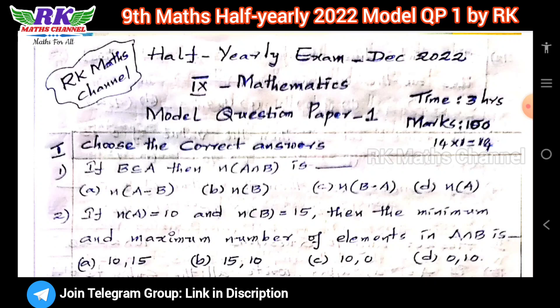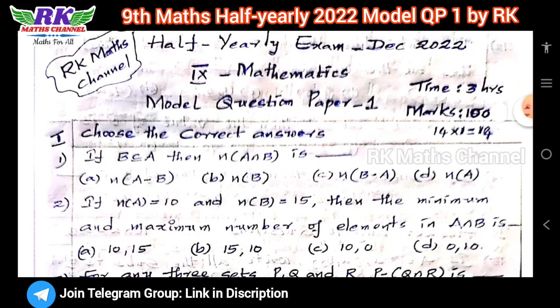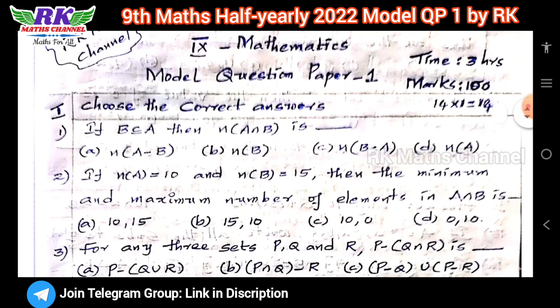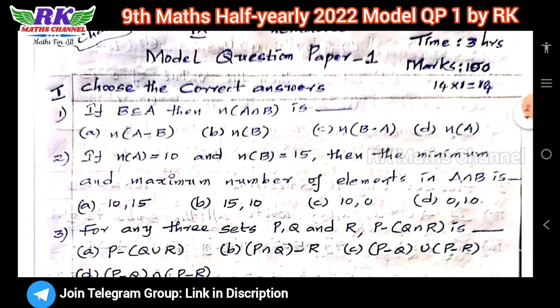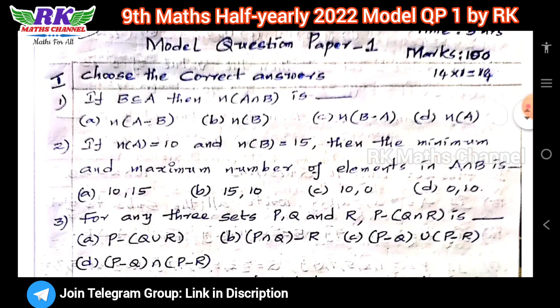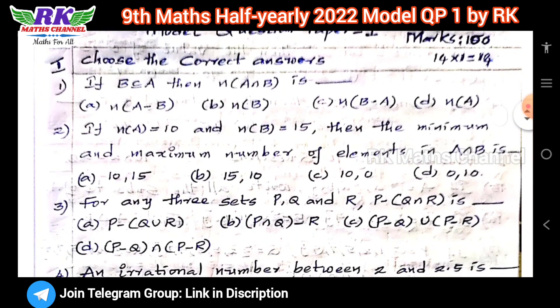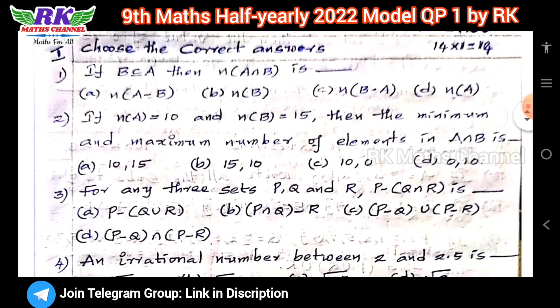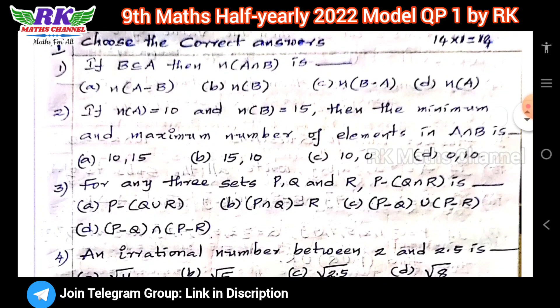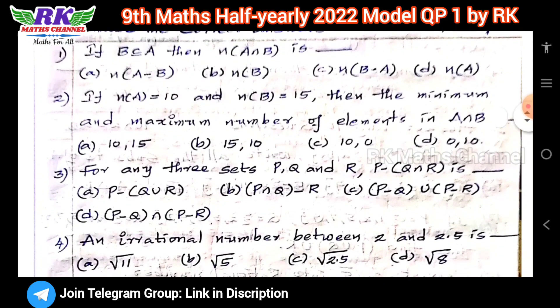So, total 3 hours, total 100 marks. The first section has 14 bits. You can practice all the questions in the book back.